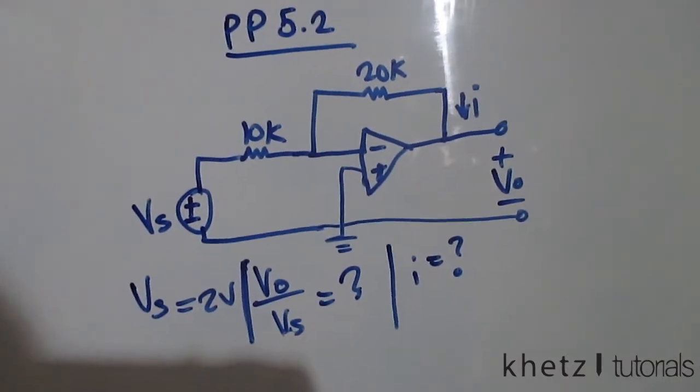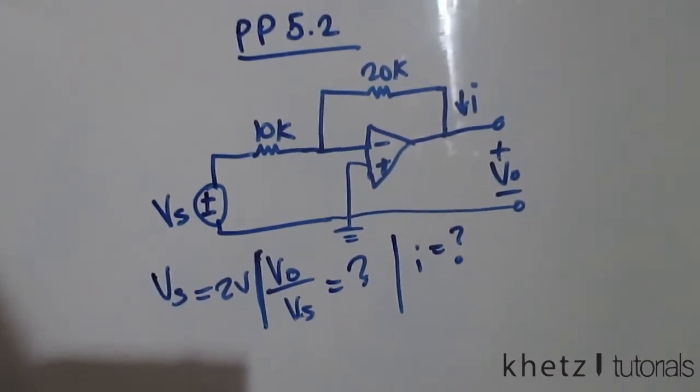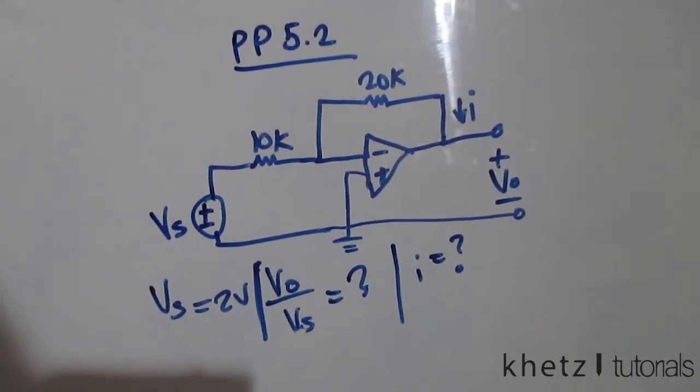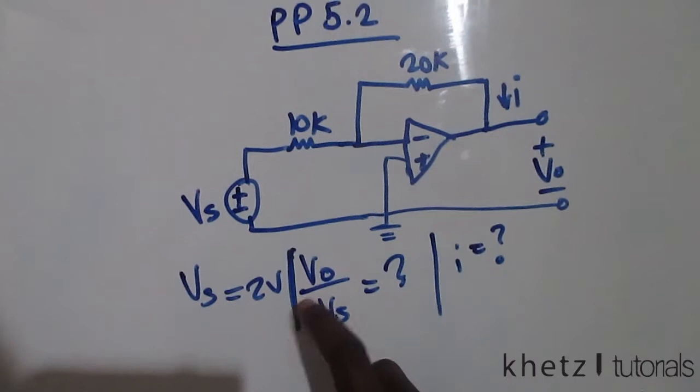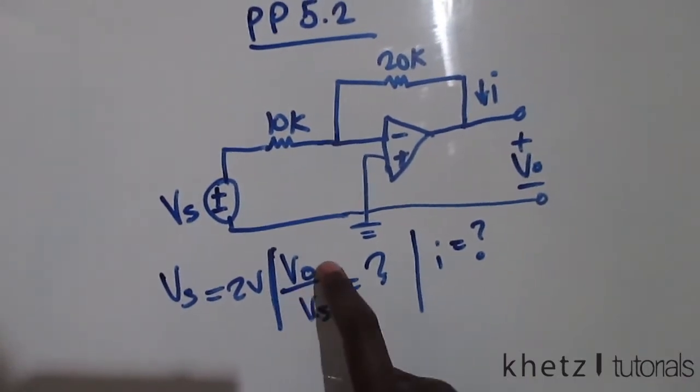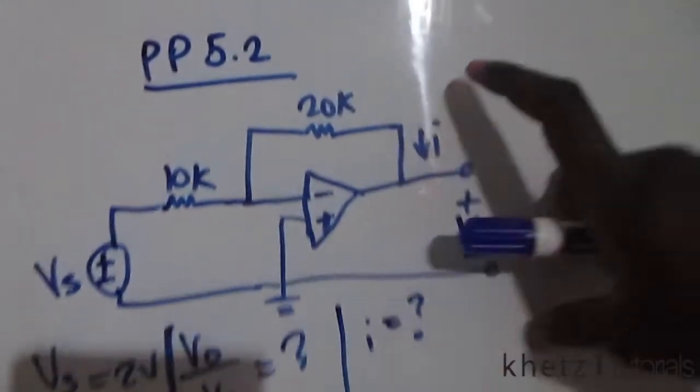Welcome to CAT Tutorials. In this video I'll be covering practice problem 5.2. We're given Vs as 2 volts and we're asked to find the closed loop gain of Vo divided by Vs as well as the current i indicated across the feedback resistor of 20 kiloohms.